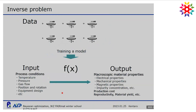Let me start with a brief introduction of Bayesian optimization and methodology. As we studied in this winter school, we can make a prediction model using data. For example, if we have large data, we can make a prediction model. For crystal growth of thin films, we have a dataset between process conditions and results of experiments, such as macroscopic material properties. We can make a prediction model to predict the material properties from experimental conditions.